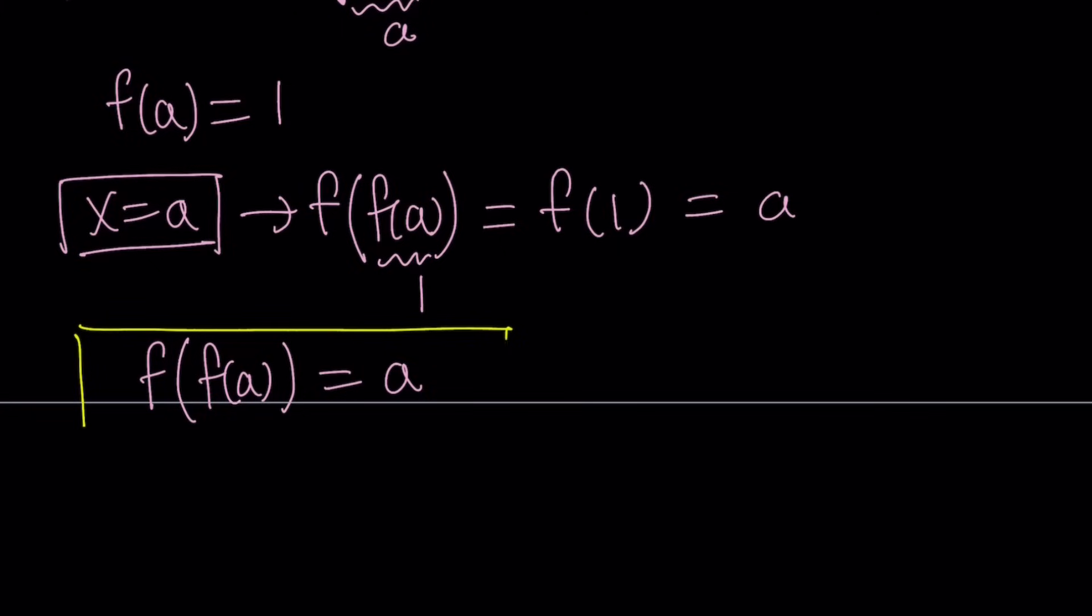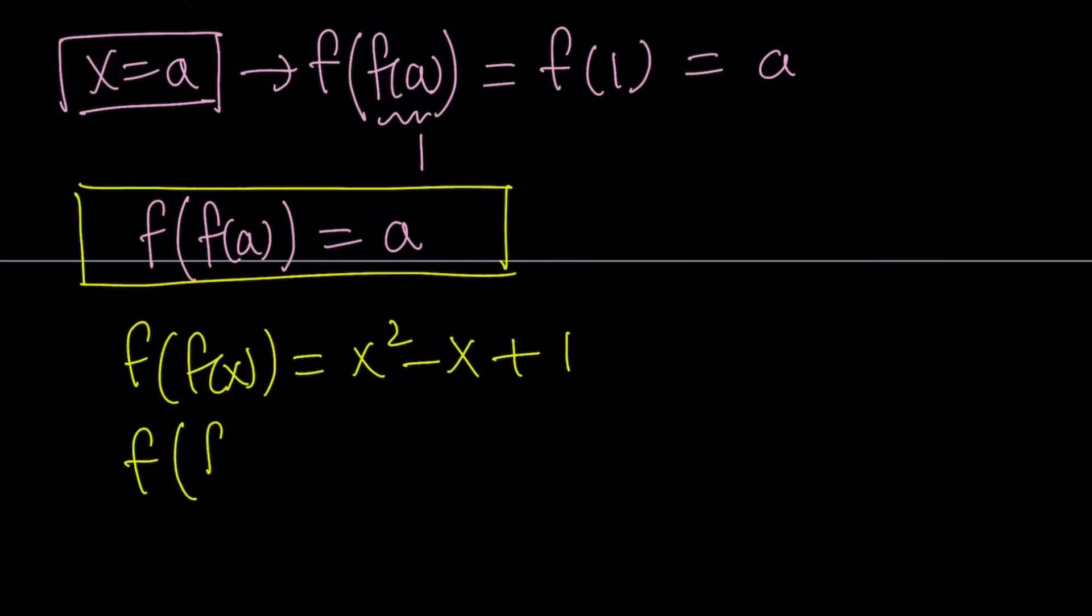So this is an important finding. Now, let's go ahead and find f of f of a in a different way. Well, we do know that f of f of x is equal to x squared minus x plus 1. Now, I can replace x with a on both sides. And that's going to give me f of f of a is equal to a squared minus a plus 1. We also know that this expression is equal to a. Therefore, I can just set the whole thing equal to a. And from here, we get a nice equation, a quadratic equation, which turns into a perfect square.